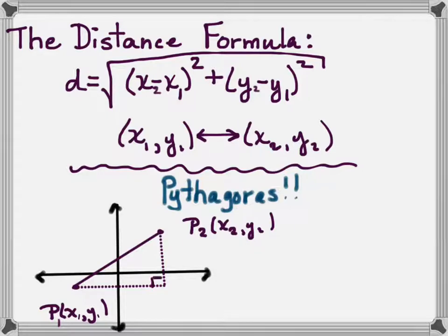Then this point down here where the right angle meets is going to be x2, y1. And you can see that that new point has the same x coordinate as P2 and the same y coordinate as P1.